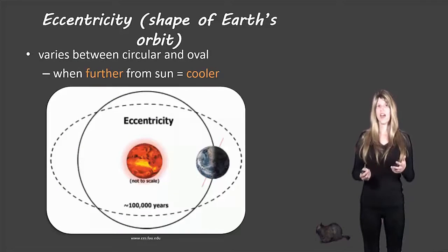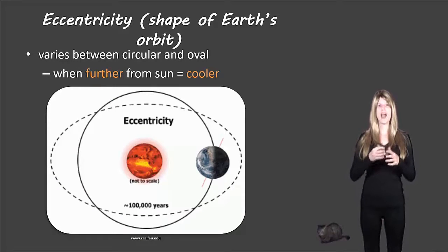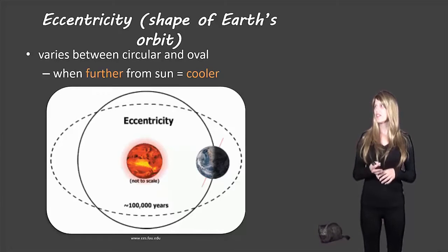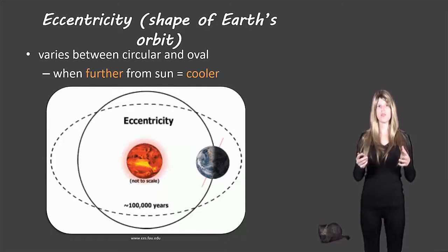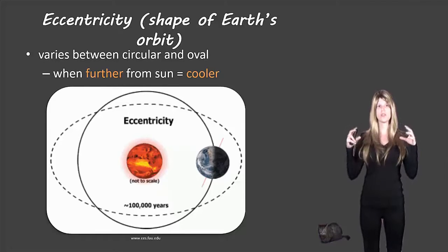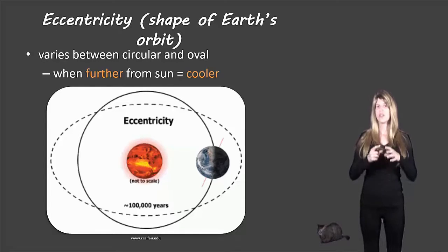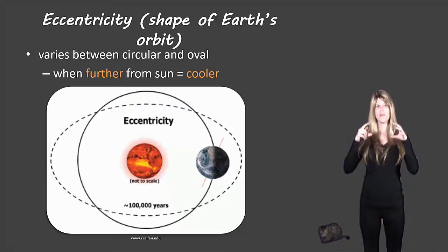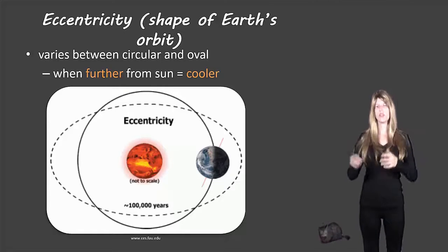The next factor has to do with several different aspects of the Earth's orbit. The first one is eccentricity, which is the shape of the Earth's orbit — whether it's closer to a circle or closer to an oval. When it's more of an oval shape, the Earth gets further from the Sun and it will be cooler.